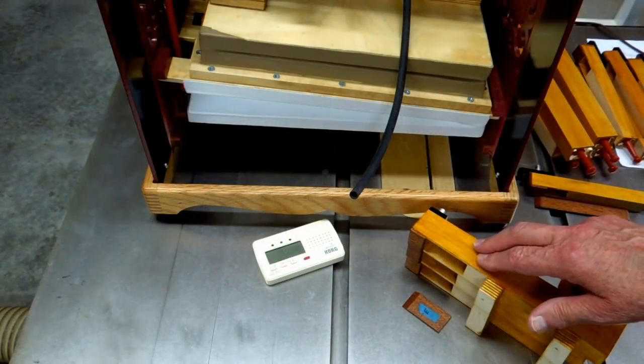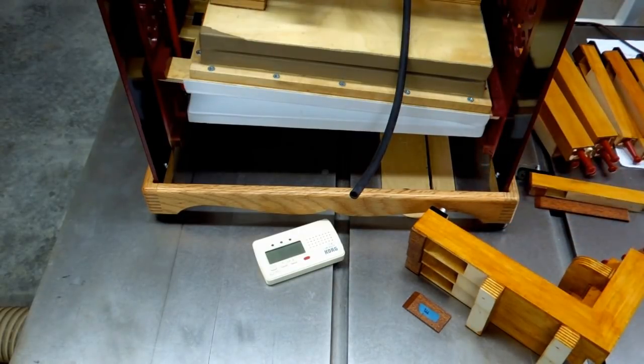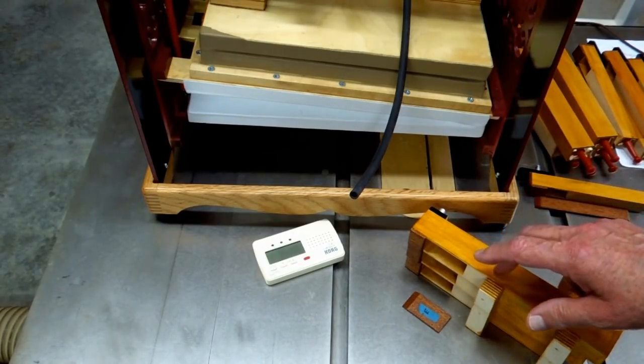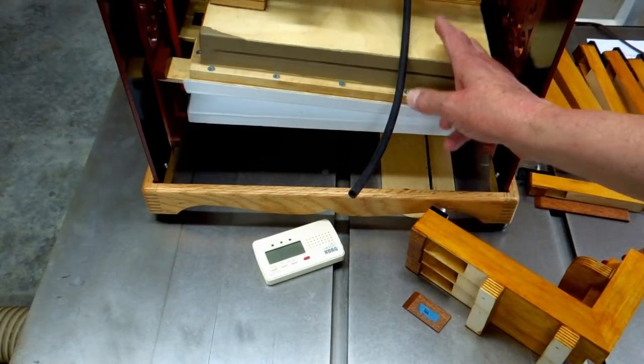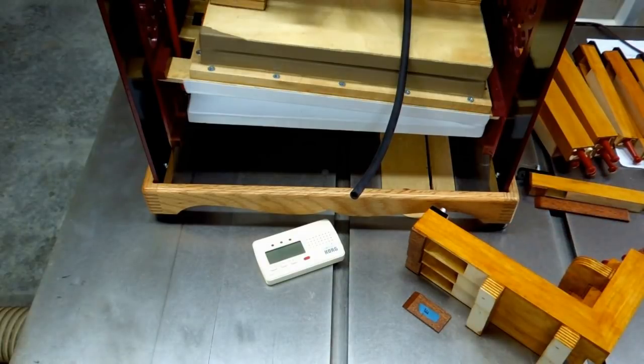You want to voice and tune the pipes on the air supply that they will be installed with. So if these pipes are going to be used in this organ, you use this reservoir and bellows to voice and tune these pipes.